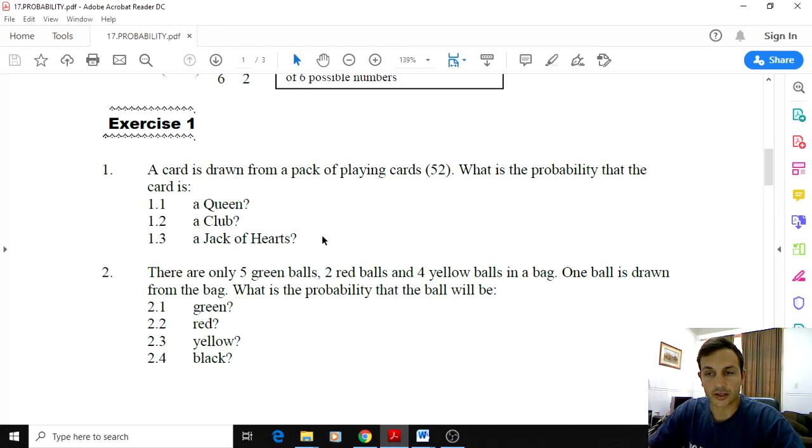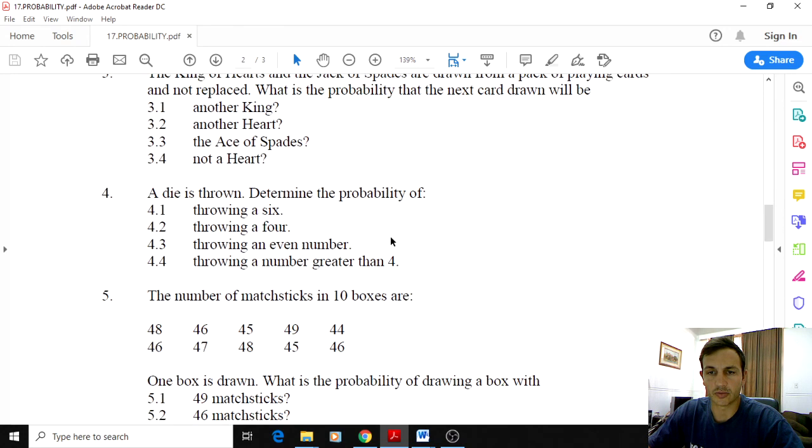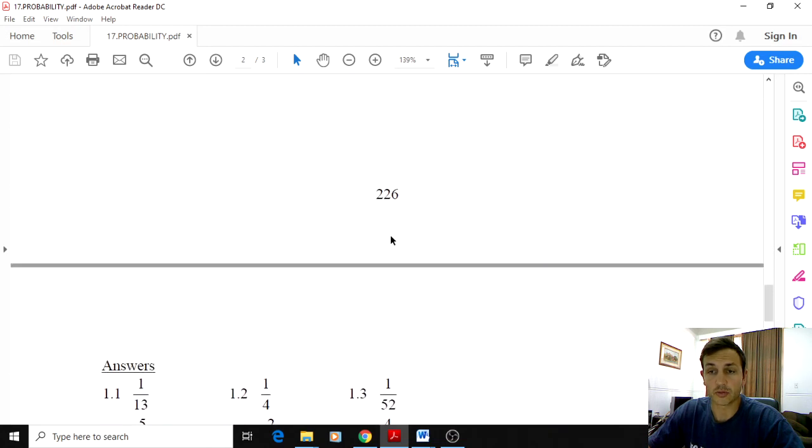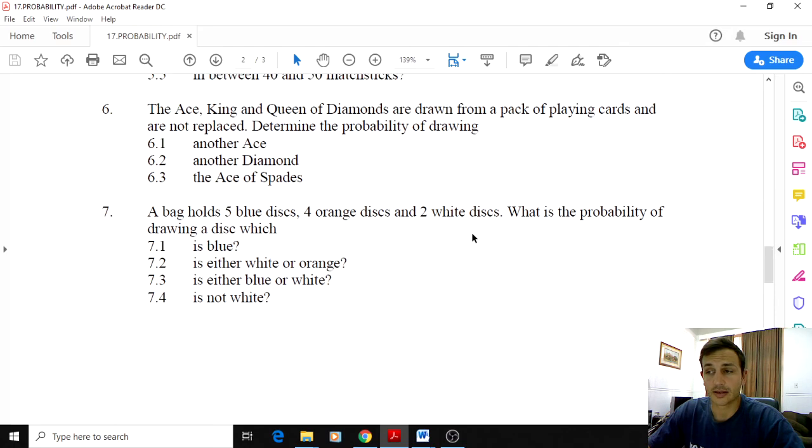And then there's only one jack of hearts, so that's going to be one out of 52. Right gentlemen, so that is just a quick discussion on this probability section and it doesn't really get far more difficult than that. That is all that you would be expected to know.